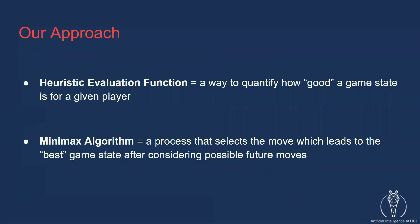Our approach consists of two components. The first component is the heuristic evaluation function. We can think of it as the way to quantify how good a game state is for a given player. This means that given a board and a player, the function will output a numerical value representing how well things are going for that player.